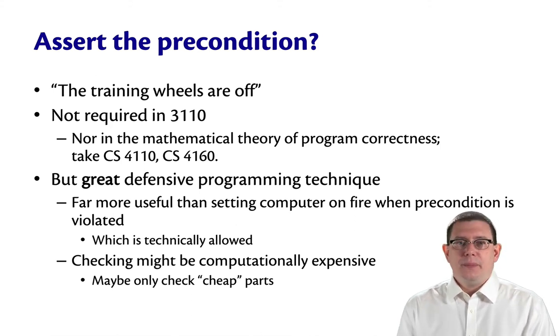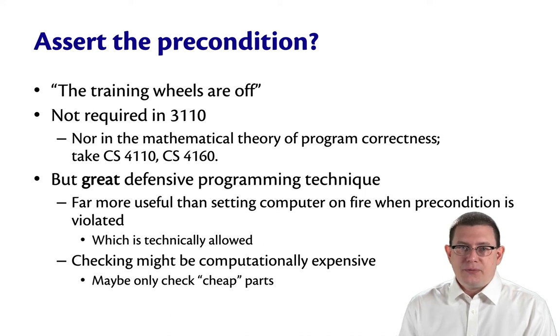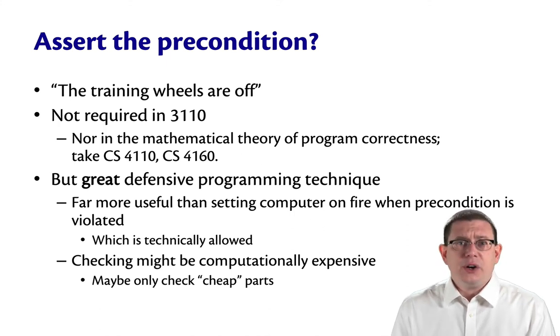The problem is that not all code is as simple as CS1110 code. In real life, preconditions get so complicated sometimes that just checking them would make your code unacceptably inefficient. For example, maybe checking a precondition about a data structure requires looking at every single value contained within that data structure. Now, all of a sudden, you invoke an operation that was supposed to be constant time, and it turns into linear time because you asserted the precondition.